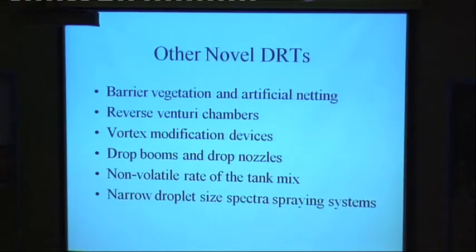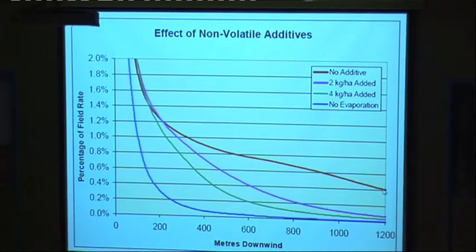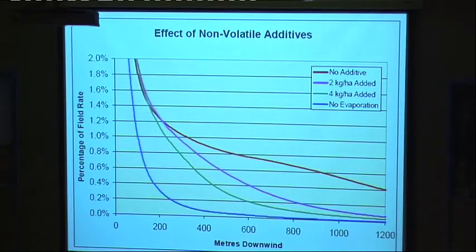Other approaches include a shorter boom length, drop booms dropping the nozzle into the crop below the boom, and changing the amount of non-volatile materials in the tank mix. APVMA analysis shows that near the edge of the field results are pretty similar, but as we move further away, if we have more non-volatile material in the tank — anything other than water, typically — we're reducing evaporation and have significantly less drift anywhere beyond a couple of hundred metres downwind of the spray.